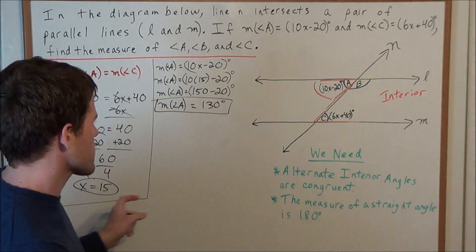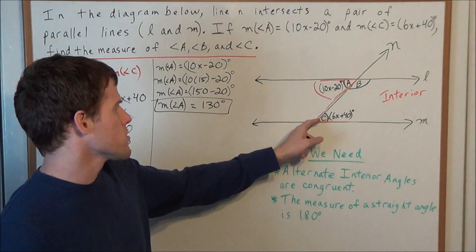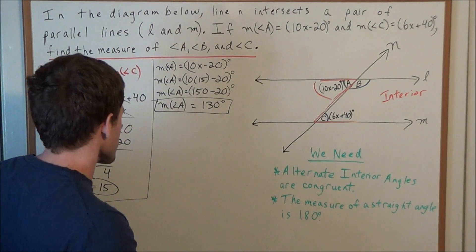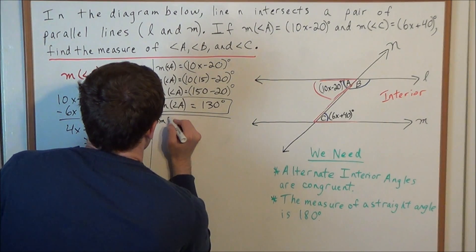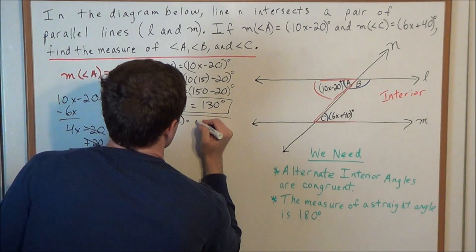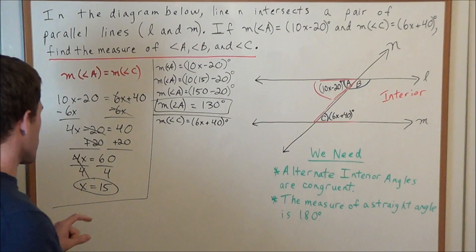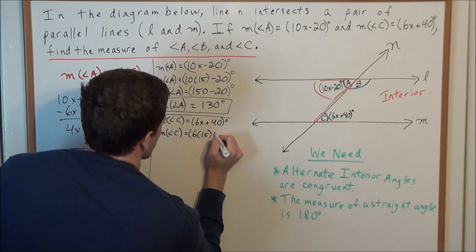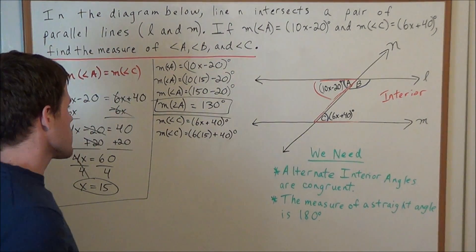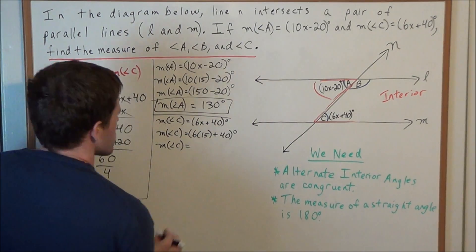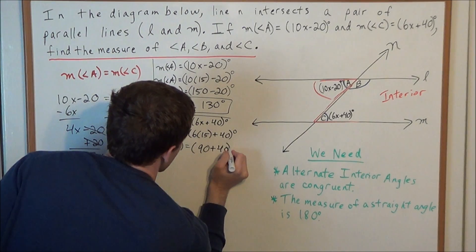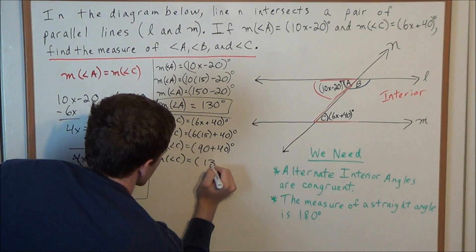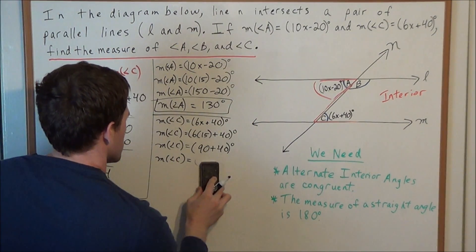We could run x equals 15 through the expression for angle C, but we should get 130 degrees as well because they're alternate interior angles and the measure of angle A equals the measure of angle C. We'll verify anyway: the measure of angle C equals 6x plus 40 degrees. Substituting x equals 15, we get 6 times 15 plus 40 degrees. 6 times 15 is 90, so 90 plus 40 gives us the measure of angle C equals 130 degrees.